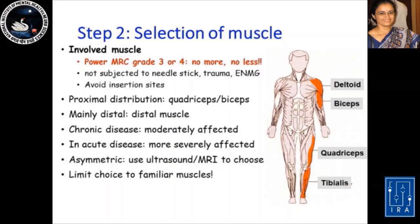If the weakness is proximal in distribution, it would be good to choose the quadriceps or biceps. If the weakness is mainly distal, opt for a distal muscle. In chronic disease, choose a moderately affected muscle. In acute disease, choose a more severely affected muscle, but keep in mind that the power should be grade 3 or 4 — no more, no less. If it is asymmetric, you could use an ultrasound or an MRI to choose the site of biopsy, but please limit your choice to familiar muscles.